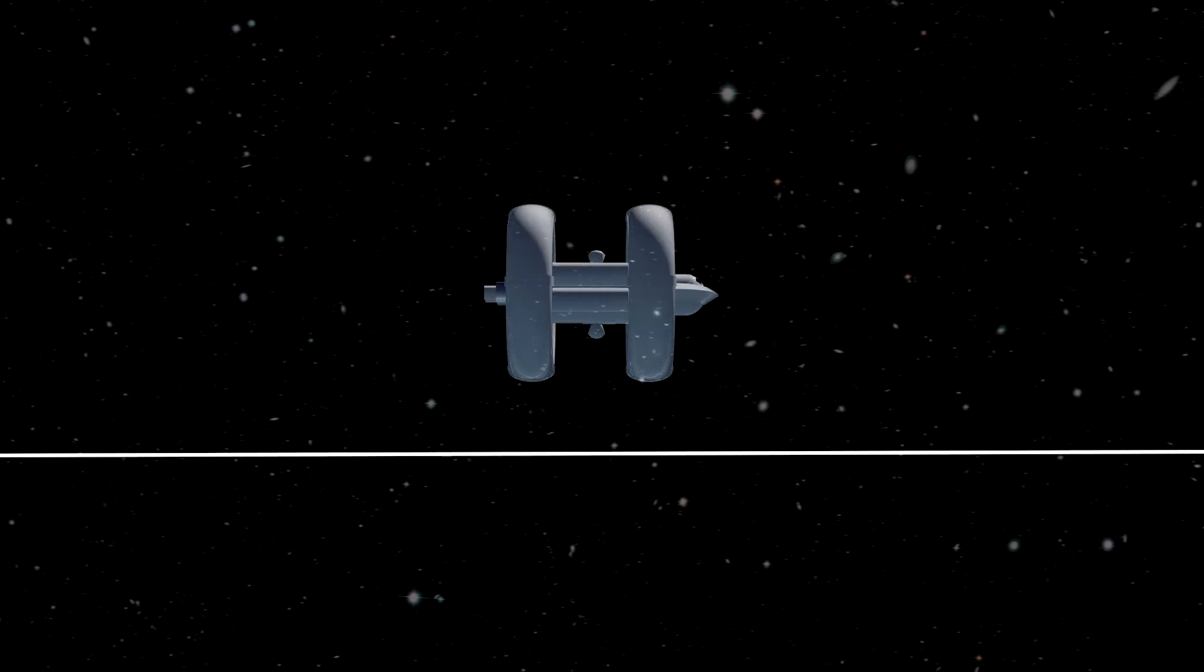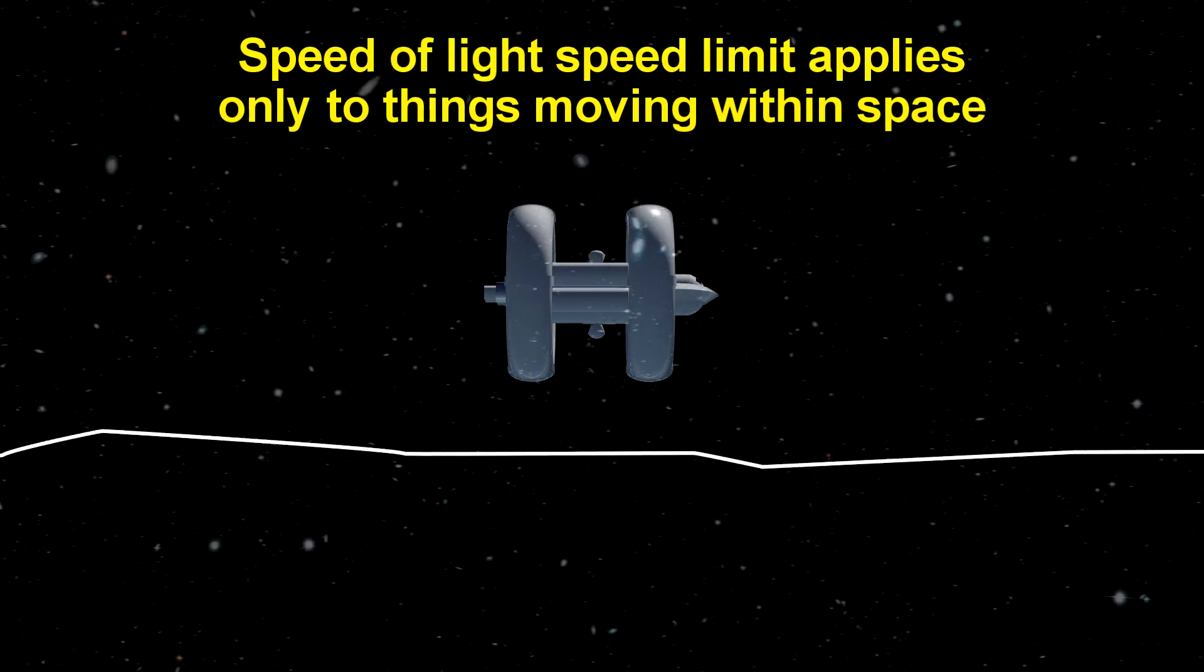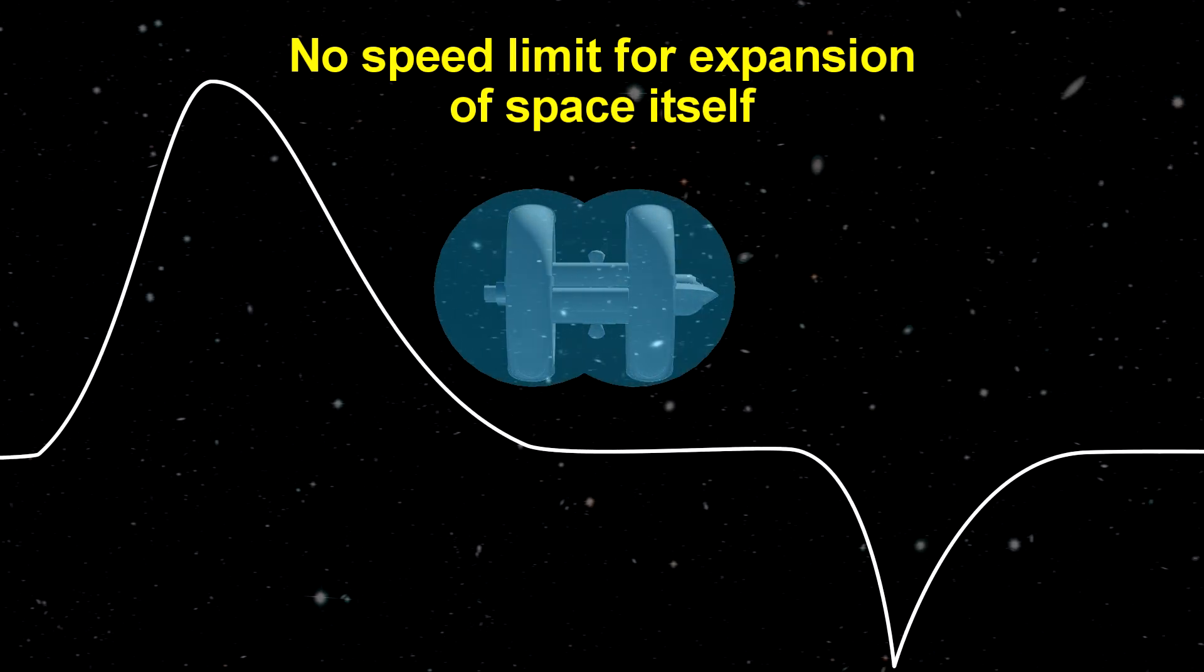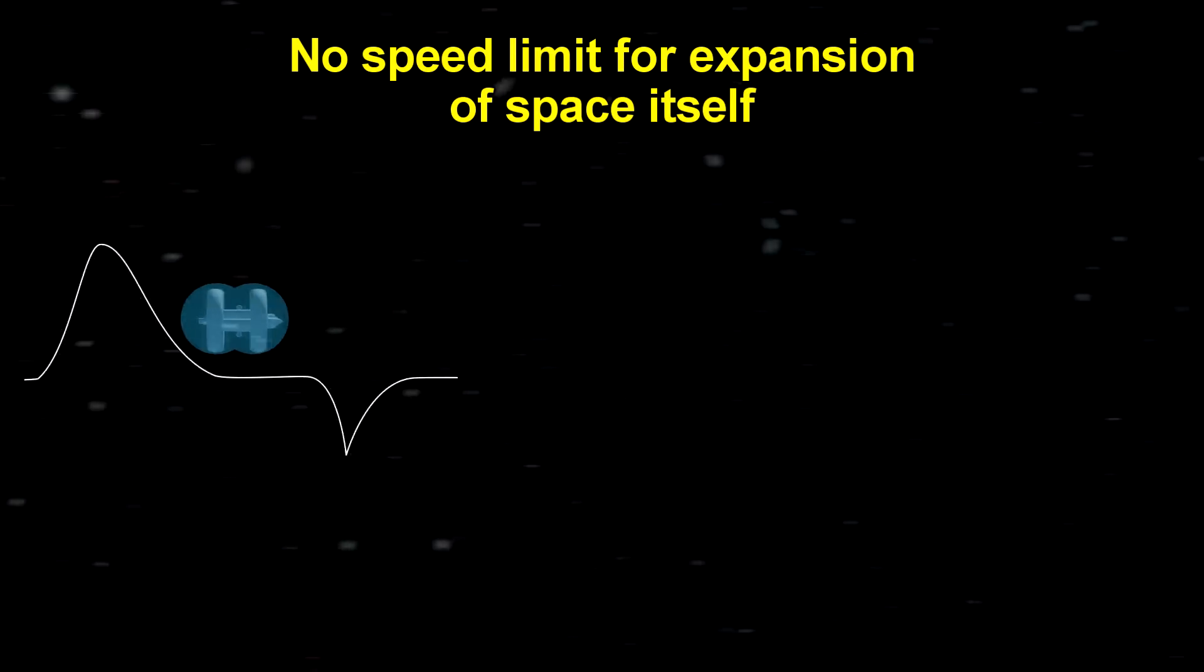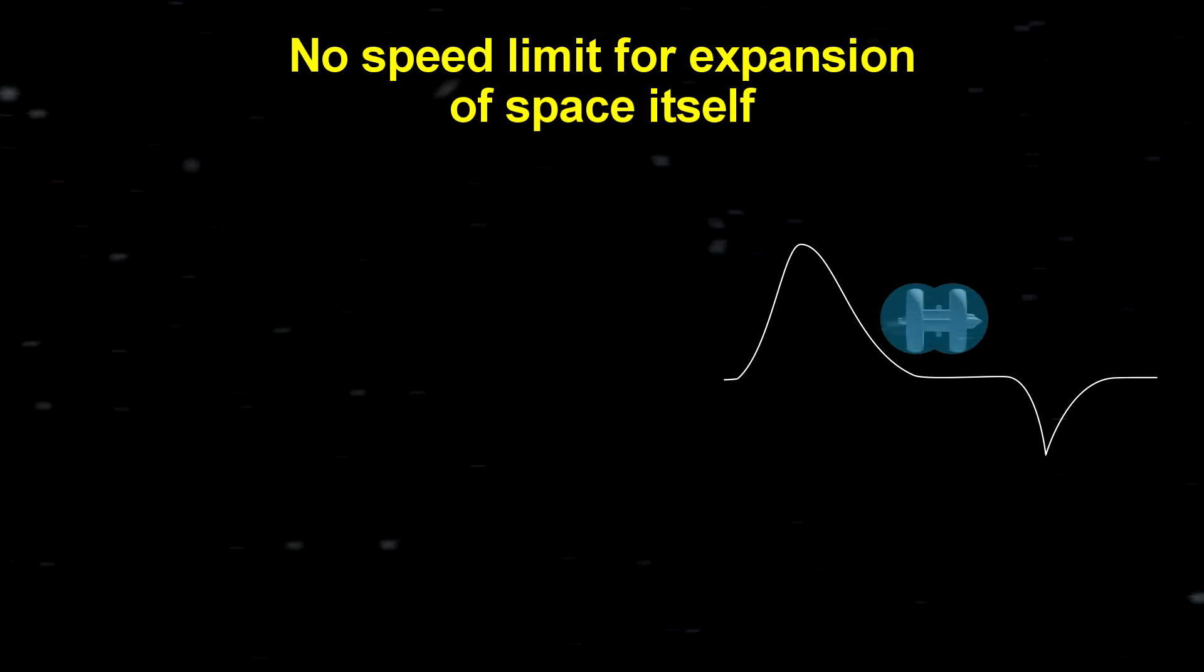This is where the loophole is in Einstein's speed limit, that nothing can move faster than the speed of light. This speed limit only applies to objects traveling within space, not the movement of space itself. Space can move at any speed. So that bubble of space in Alcubierre's geometric solution can move at any arbitrary speed, theoretically even 9,000 times the speed of light.